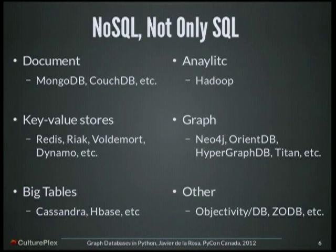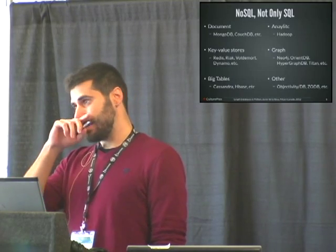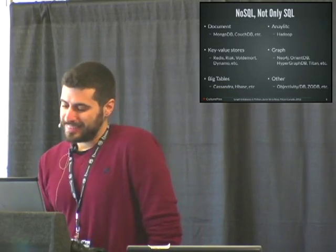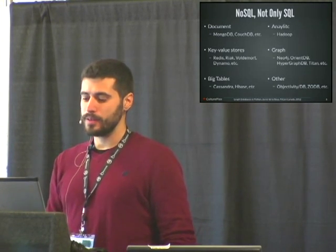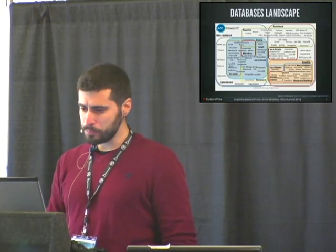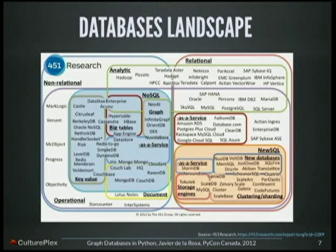This movement was called NoSQL, and it can stand for 'not only SQL.' A lot of different kinds of databases appeared. We have document databases like MongoDB, we also have key-value stores that are like huge Python dictionaries, like Redis or Dynamo, big tables like Cassandra, Hadoop for analytics, even SOAP object databases, and we also have graphs like Neo4j, OrientDB, HyperGraphDB, Titan — a lot of them. This is pretty much the current landscape for databases.